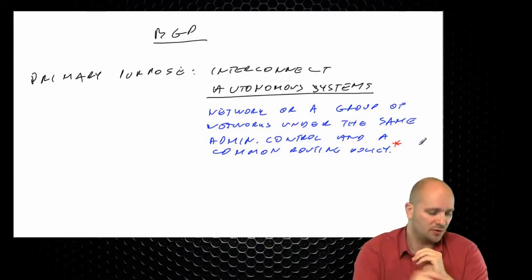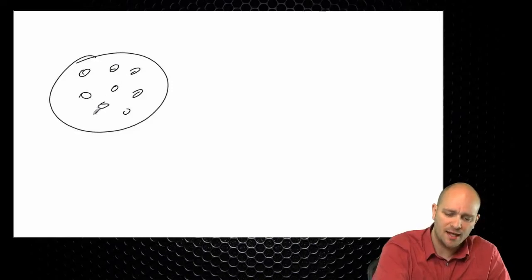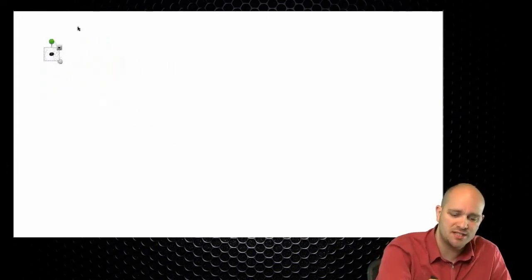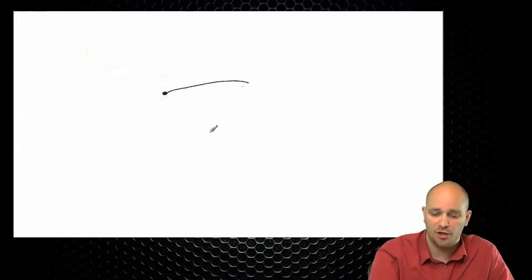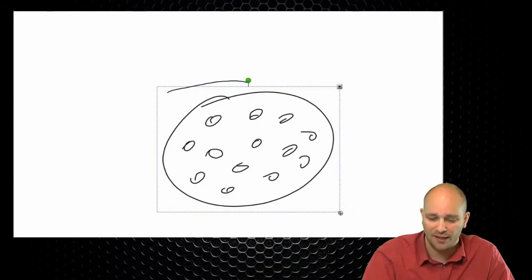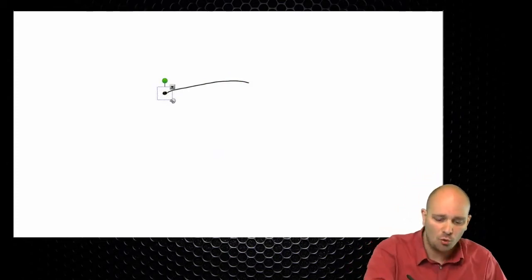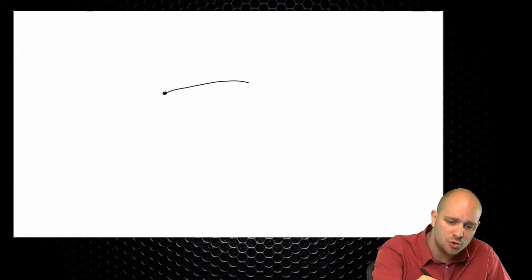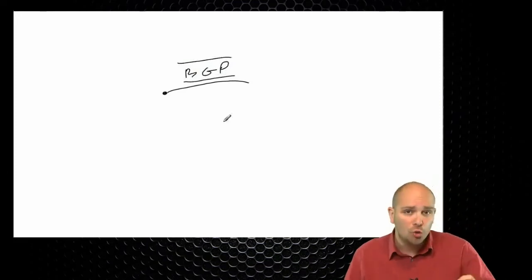What I mean by the common routing policy is that when you have an autonomous system on the internet, no matter how complicated it is, no matter how many routers it has, when we look at it from the BGP perspective, we are seeing just a very simple dot on the internet that might be connecting to another similar dot. We don't care about the internal complexities. All we care about is that if they say they can deliver traffic somewhere, they can. BGP is the tool used to interconnect these autonomous systems — the glue that holds the internet together.